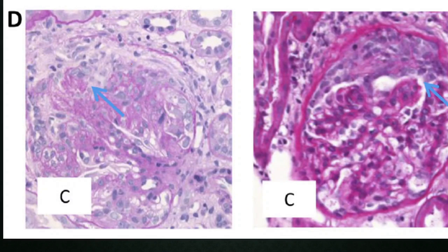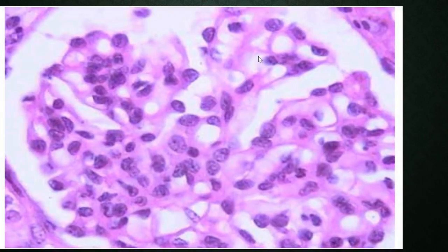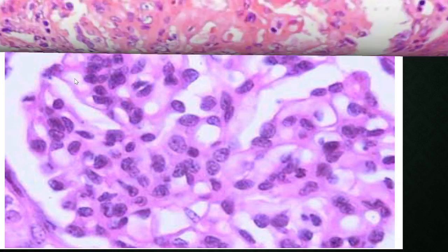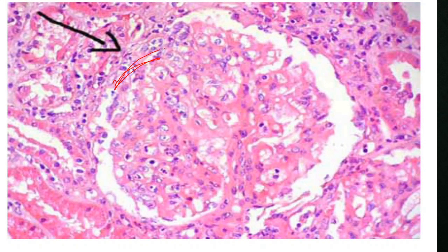To illustrate crescents: this shows proliferation of parietal epithelial cells more than two layers thick — indicating presence of a crescent. Another image shows increased mesangial cells — more than four mesangial cells as per the definition in the MEST-C score. A further image demonstrates crescents along with endocapillary proliferation and mesangial hypercellularity together.